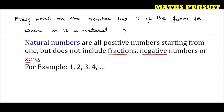For example, 1, 2, 3 up to infinity — positive numbers are the only ones considered as natural numbers. They do not include zero, fractions, or negative numbers. Now, the question is: every point on the number line is of the form root m where m is a natural number. For example, let m equal 4, so root m means root 4.